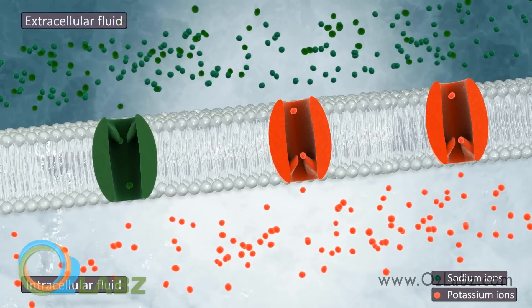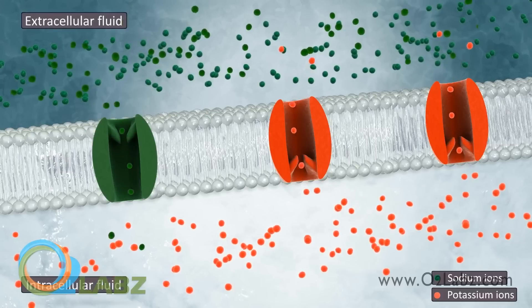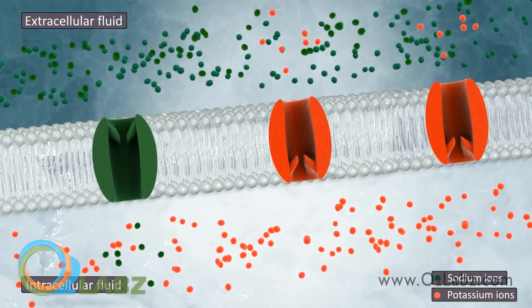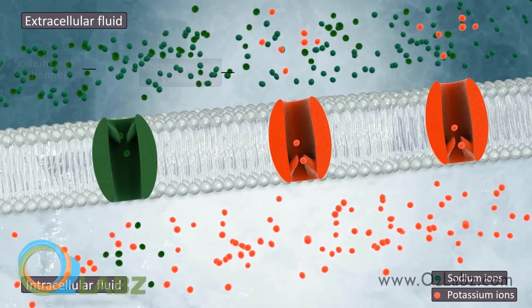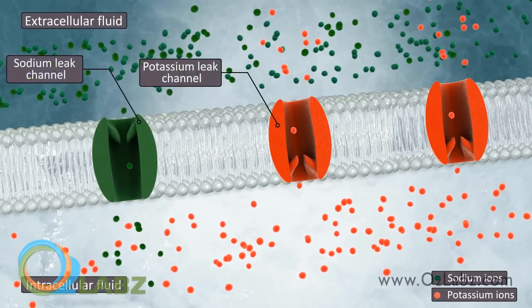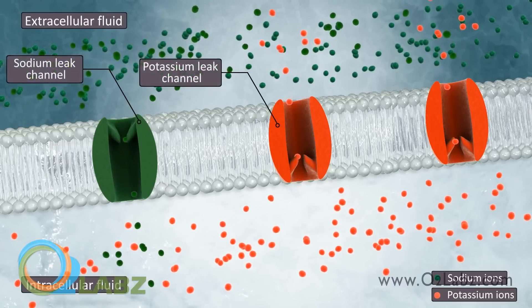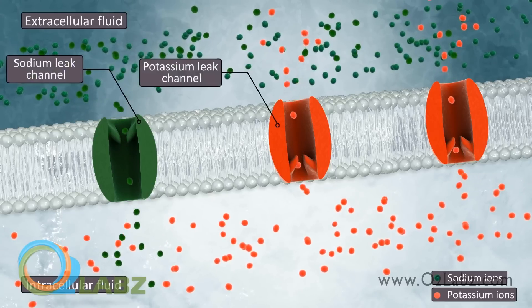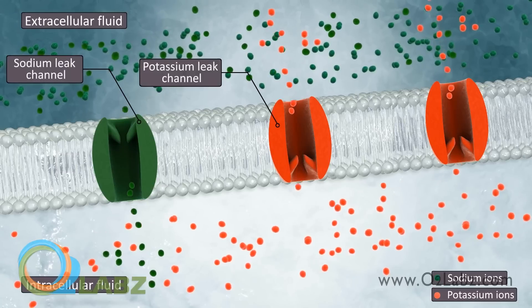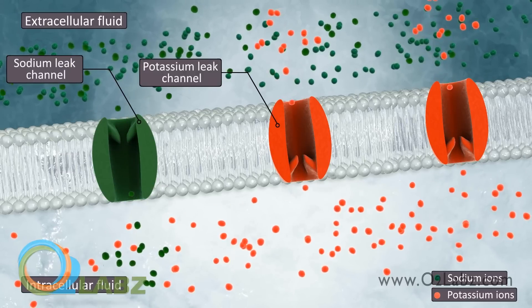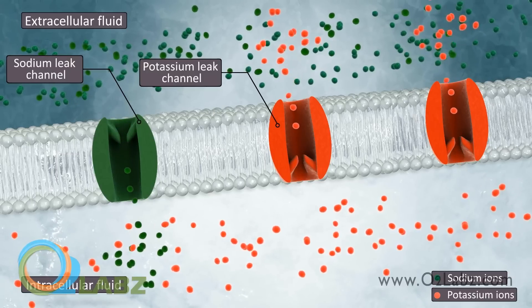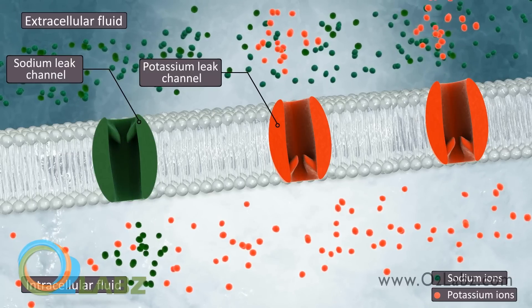The resting membrane potential voltage is determined by the concentration of electrically charged ions on either side of the membrane. It is established primarily by leak channels. There are more potassium leak channels than sodium leak channels, so more positively charged potassium ions pass out of the cell than positively charged sodium ions diffuse in. Also, sodium-potassium pumps move more sodium ions out of the cell than potassium ions in.